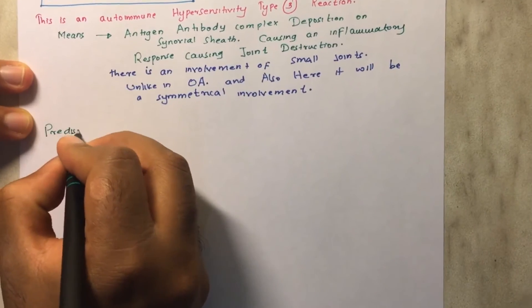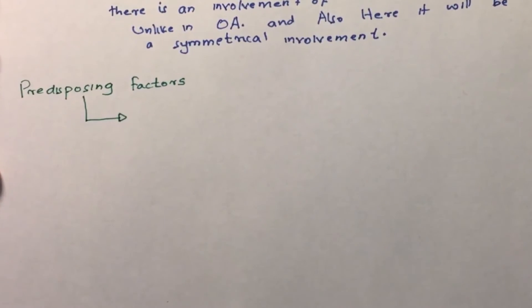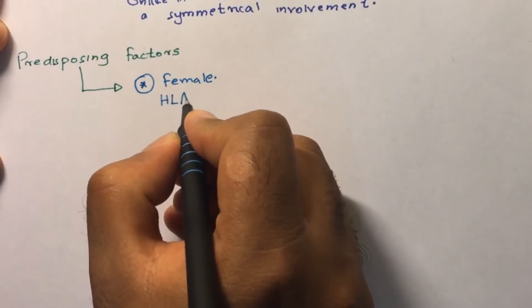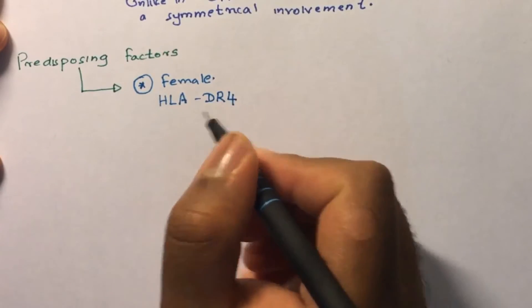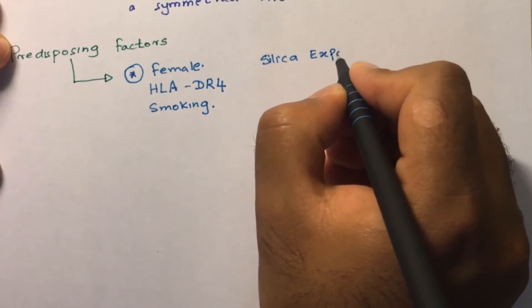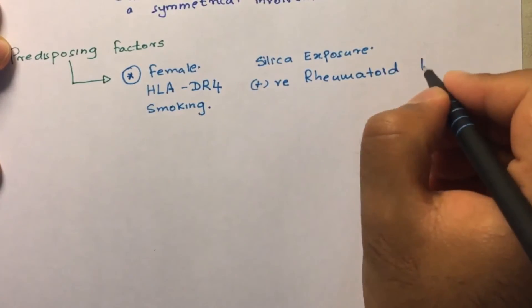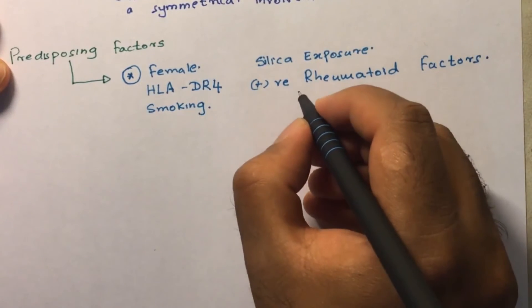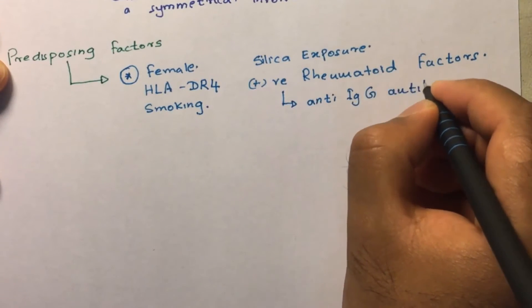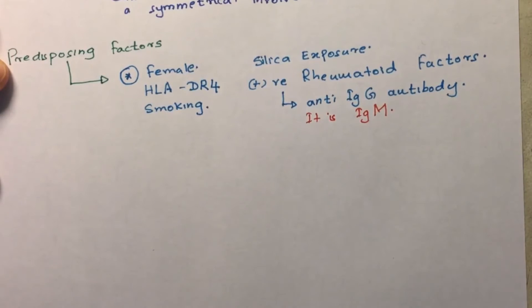The predisposing factors for rheumatoid arthritis include: female gender, the genetic allele HLA-DR4 associated with rheumatoid diseases, smoking, and silica exposure. A positive rheumatoid factor — an anti-IgG antibody — is present in most patients. Anti-cyclic citrullinated peptide antibody (ACPA) is also very specific for rheumatoid arthritis.